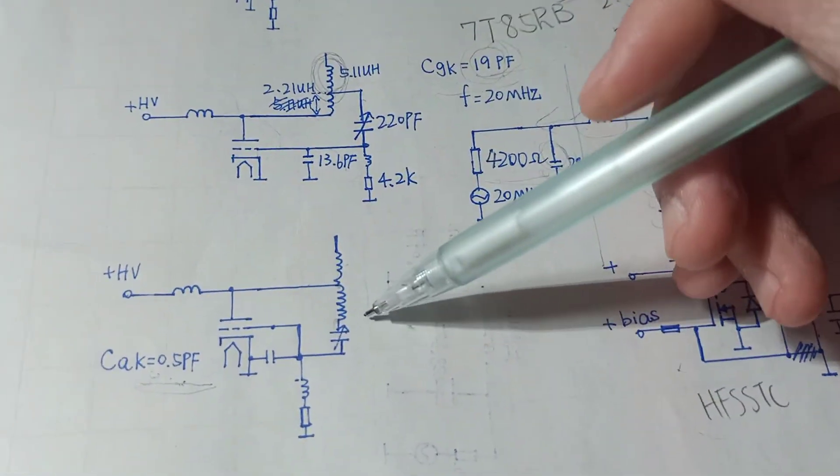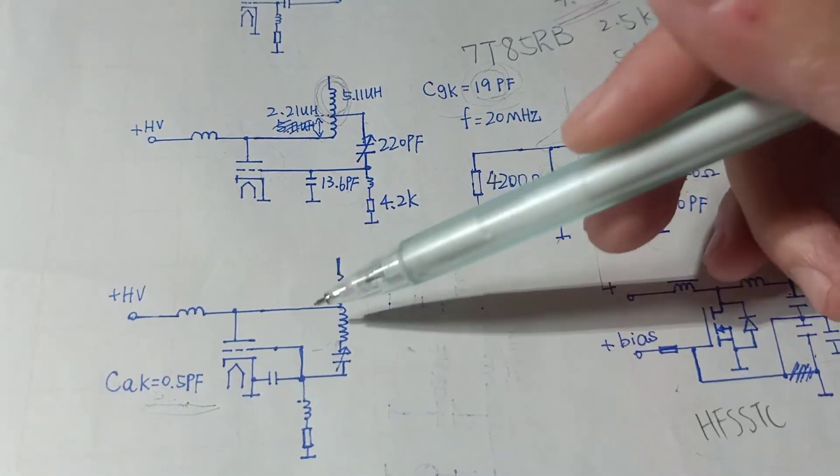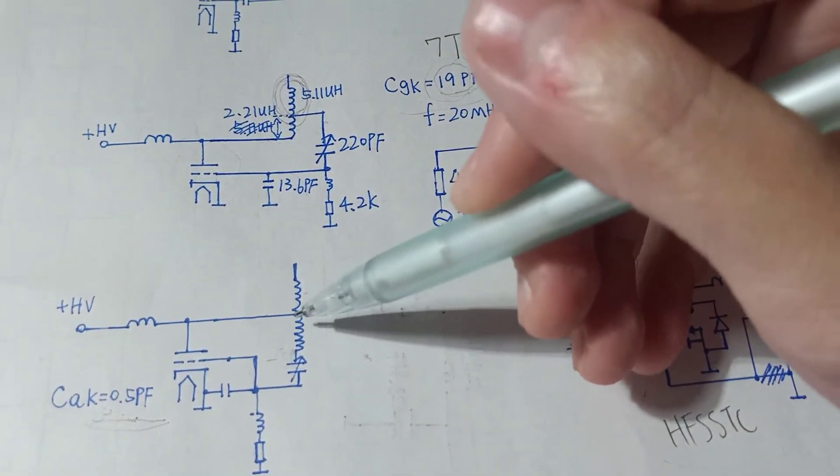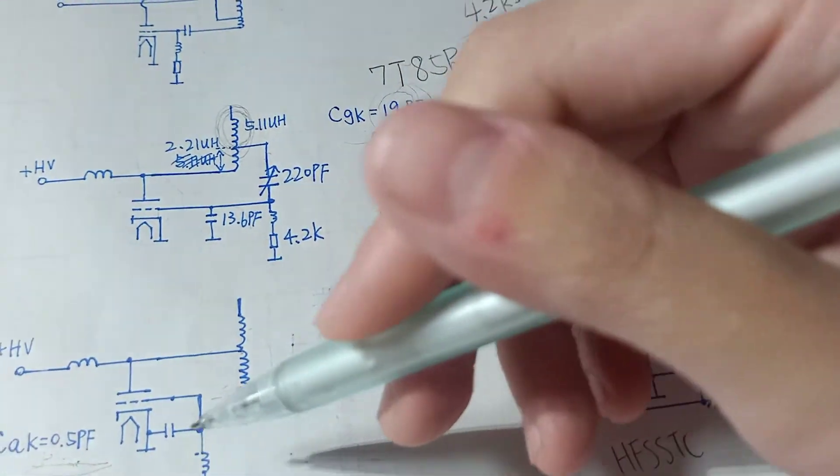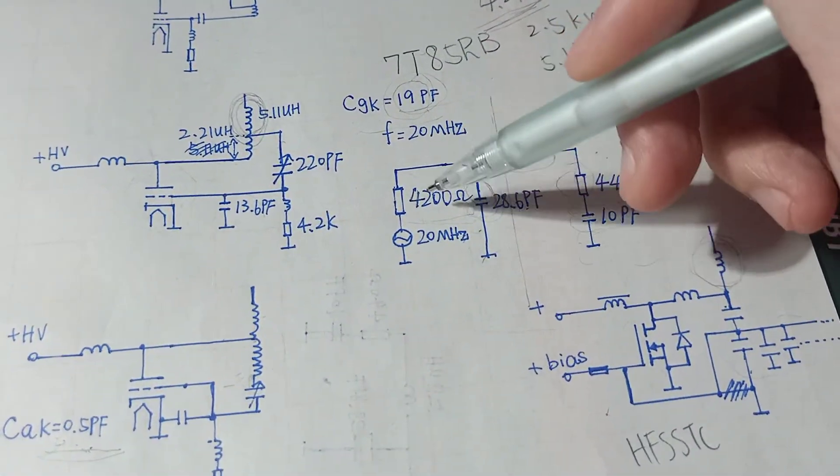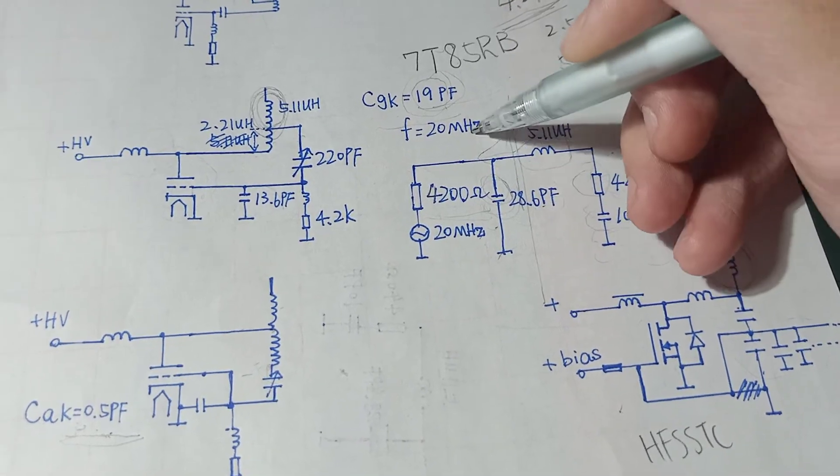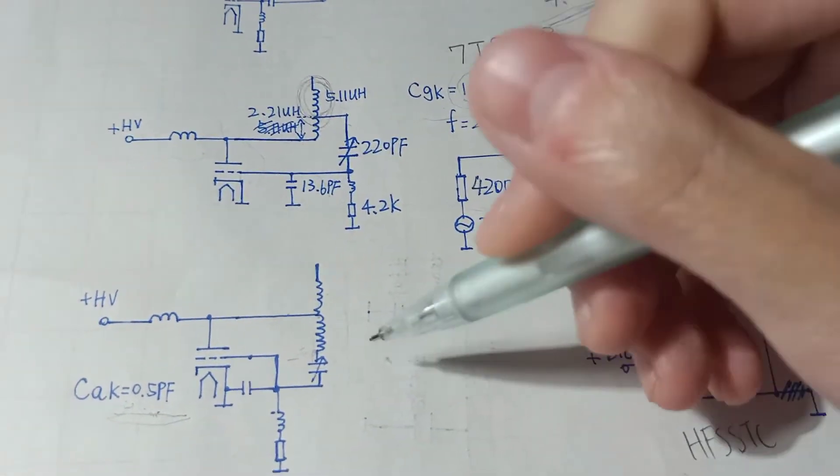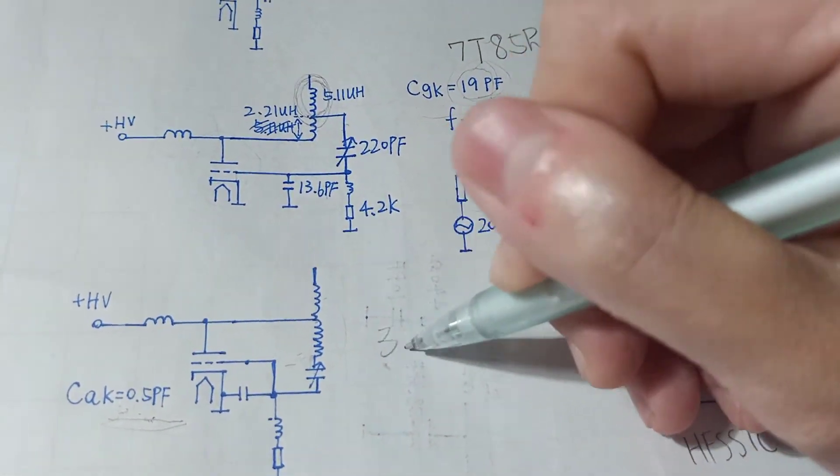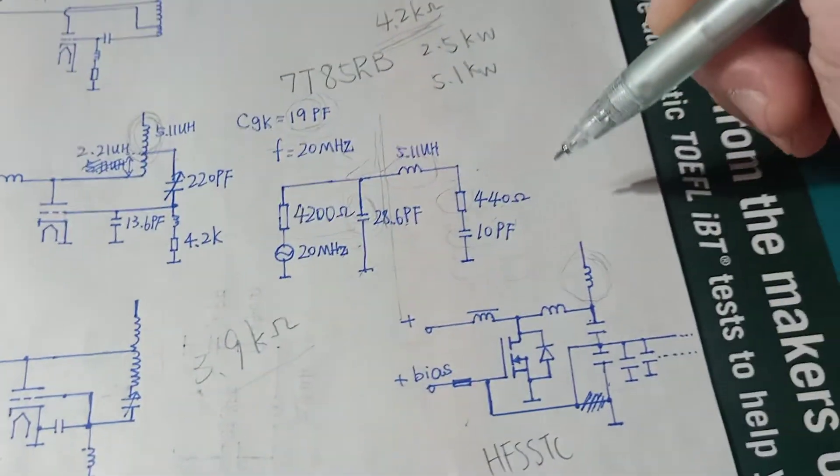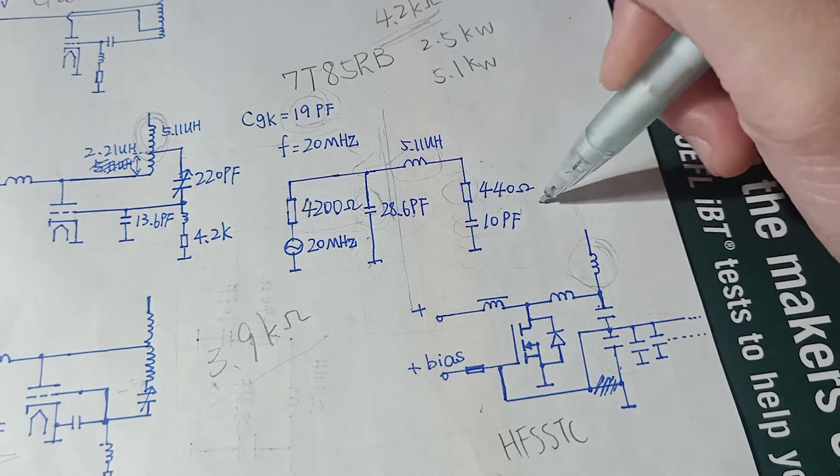And I calculated the impedance using this schematic. And I found that the impedance, if you draw a circuit like this from this circuit, you will find the impedance from the left side of the circuit is actually around 3.9kOhm. And that is too large for a 400 ohm arc.